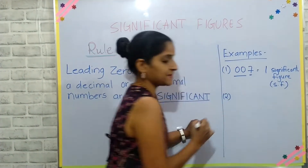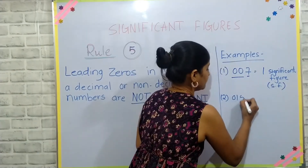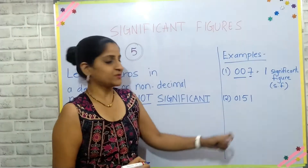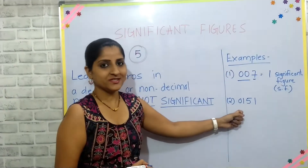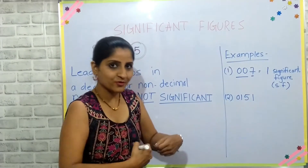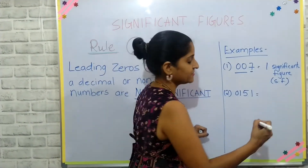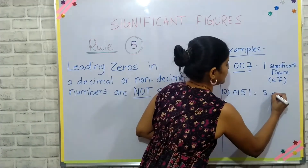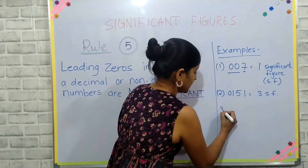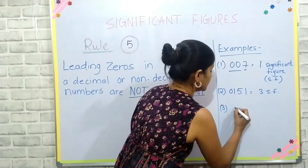Another example: the number 0151. In this number there is one leading zero — that is, a zero before the number — and it will be considered not significant. So this number will have three significant figures. Now, in the case of a decimal number: